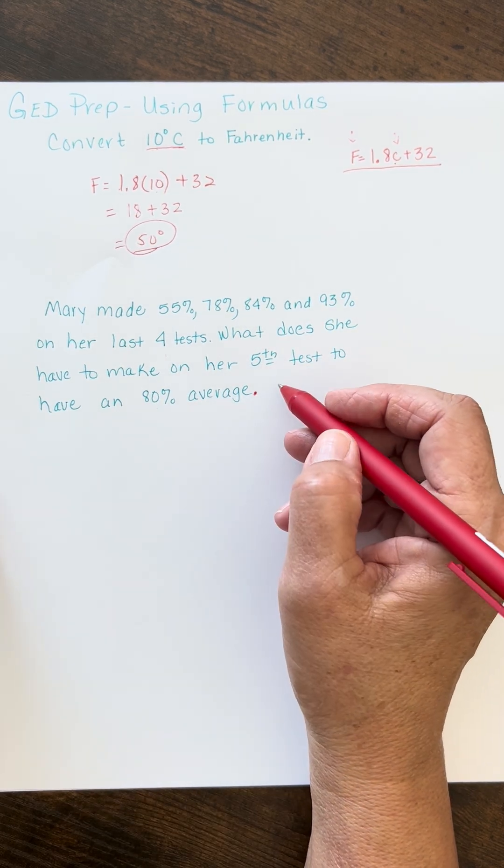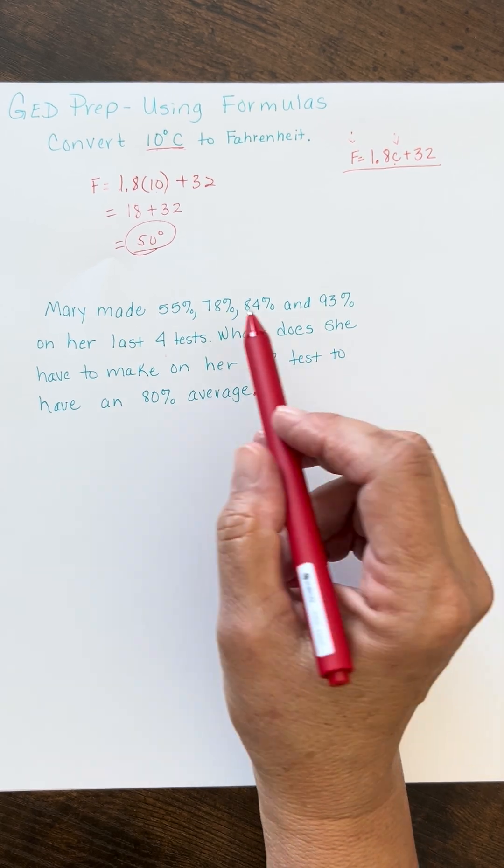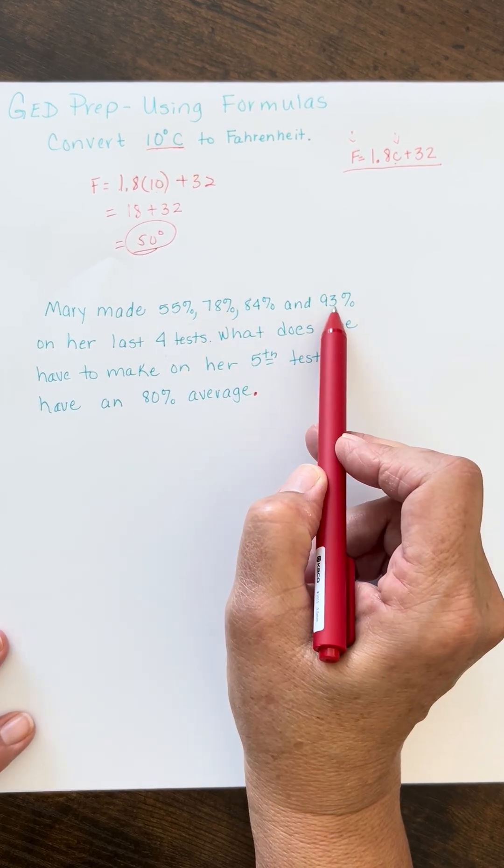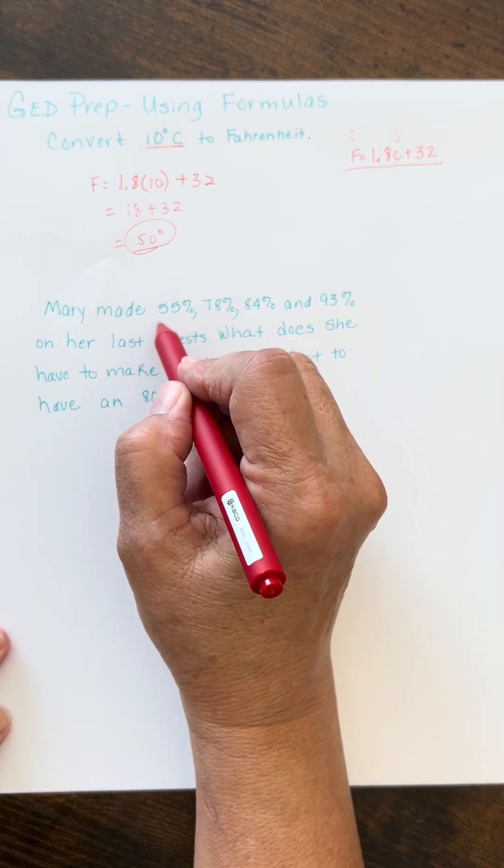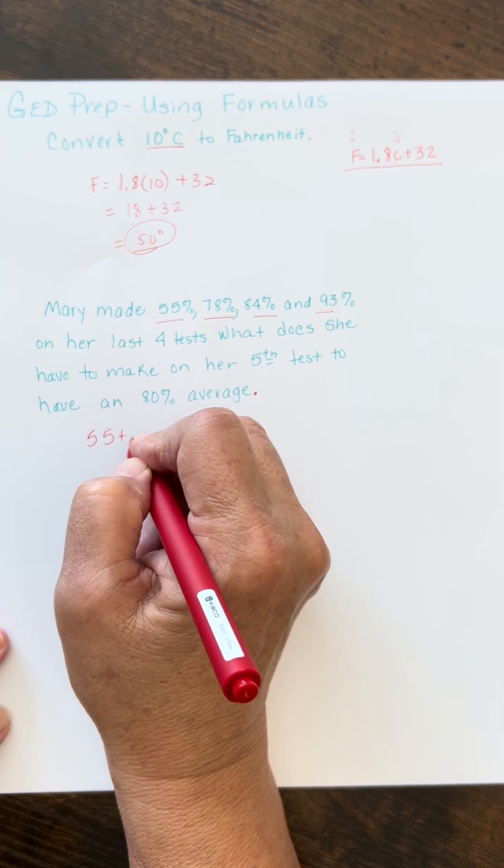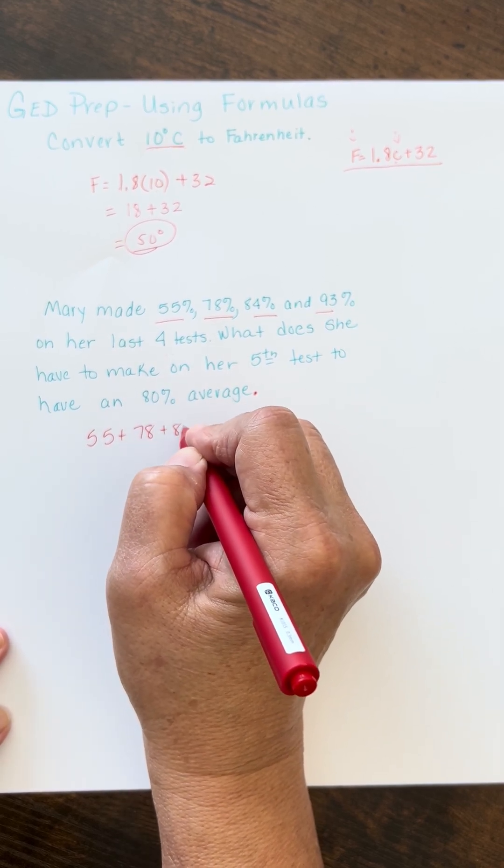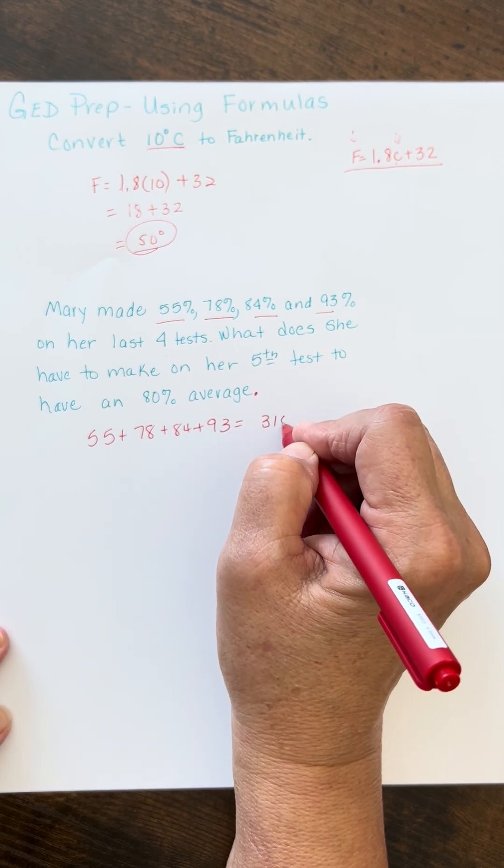Well, how do you find an average? You add all the things up, and you divide by how many you have. Now, right now, there's four things, so you would divide by 4, but what we want to do is get all of these things added up. Now, if you add 55 plus 78 plus 84 plus 93, you're going to get 310.